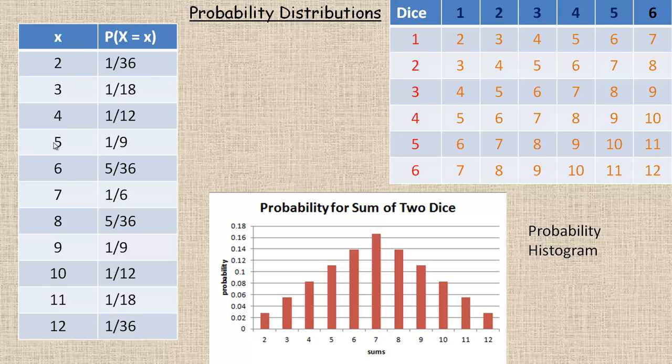In this table on the left side, the uppercase X represents the name of the random variable. I'm just calling it X. The lowercase x represents all the outcomes. So the outcomes vary from two, a sum of two, up to a sum of twelve. That's what's underneath the little x.